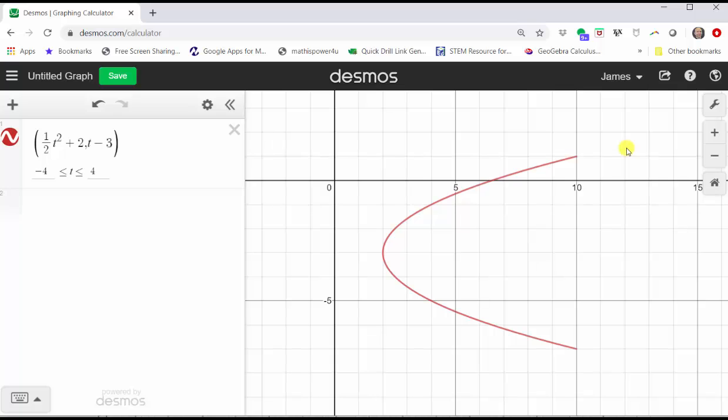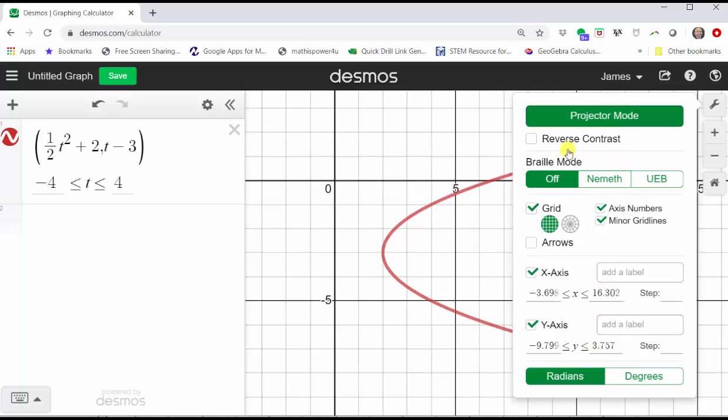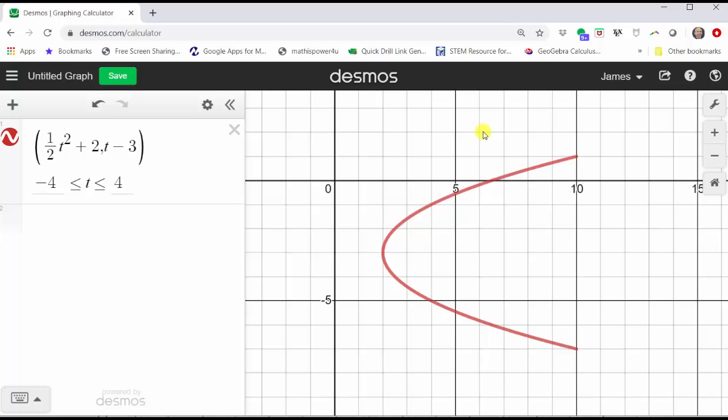To adjust the window manually, click the wrench and adjust the interval for the x and y axes toward the bottom. While we're here though, let's click the projector mode, which makes the graph and the axes more thick. To exit this menu, click outside the menu. It automatically closes.